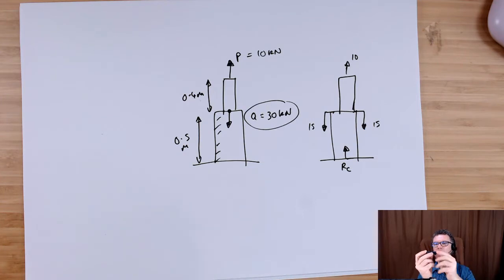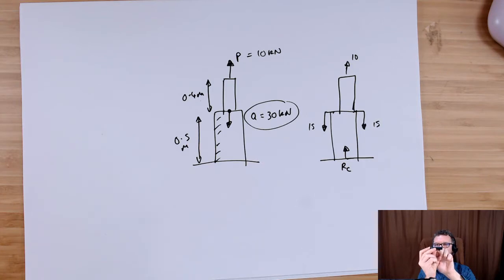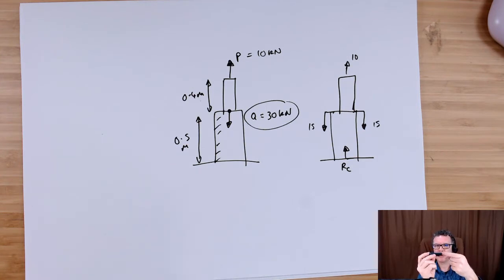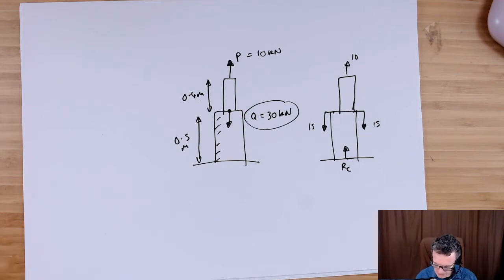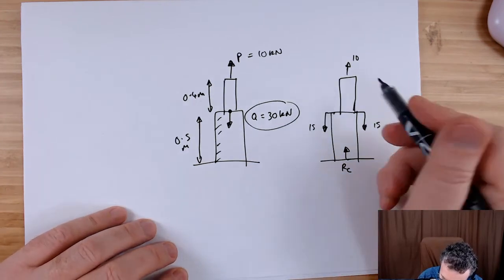What we do is define the internal force direction: by default we define it as pointing away from our initial point. It's like we imagine this to be a node, like we're doing a free body diagram for a framework. So the internal force is pointing away. Now because my internal force has to push back against that applied force, that means it's a negative force — and that tells me when it's negative, it's in compression.